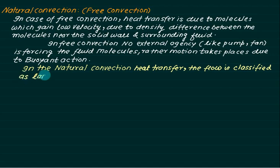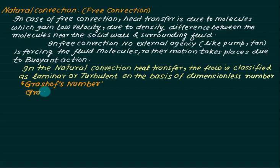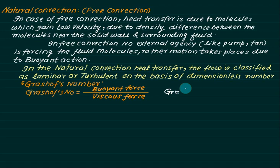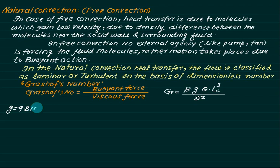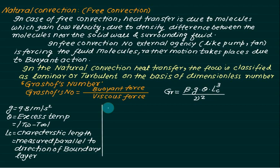In natural convection, flow is classified as laminar or turbulent on the basis of the Grashof number, whereas in forced convection we identify laminar or turbulent flow on the basis of Reynolds number. The Grashof number is defined as the ratio of buoyant force to viscous force. The expression is: Gr = (β × g × θ × Lc³) / ν². The characteristic length Lc is measured parallel to the boundary layer as it grows along the surface.